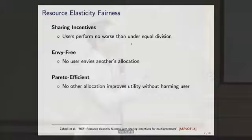Second, we want envy-freeness: Alice always prefers her allocation over Bob's, and Bob always prefers his allocation over Alice's. This defines what we mean by fair. Subject to sharing incentives and envy-freeness, we want Pareto efficiency — no other allocation can improve utility without harming someone in the system. The allocation should be the most efficient we can get given these two constraints.